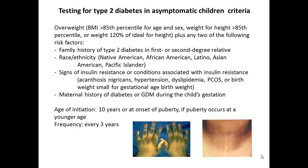There's particular interest in testing children because diabetes is increasing in pediatric populations. Children who are overweight, have a family history of diabetes, come from a high-risk ethnic group, or show signs of insulin resistance such as acanthosis should be screened. A maternal history and early age of puberty onset are also indicators. Screening should be done every three years in suspected children.